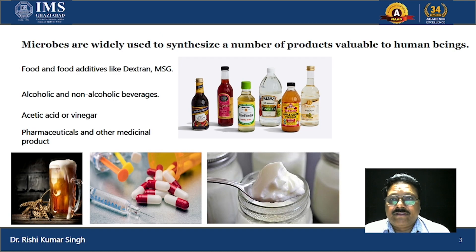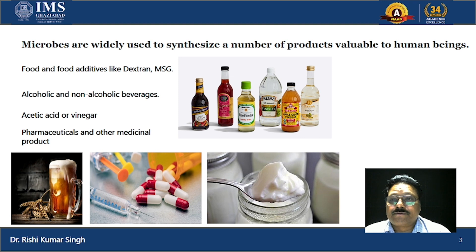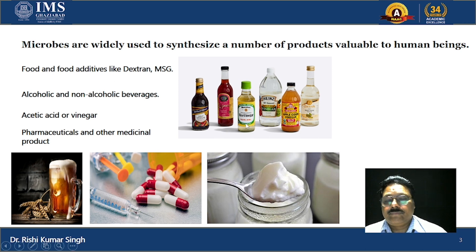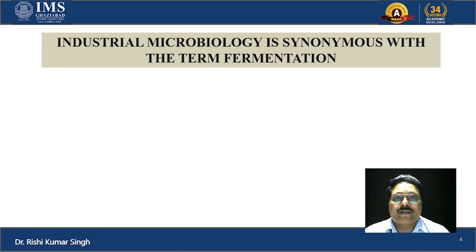In this slide, you can see that microbes are widely used to synthesize a number of products like bakery products, food and food additives like dextran — used in various soups and puddings — MSG in Chinese preparations, alcoholic and non-alcoholic beverages, vinegars, glycolic acids, and medicinal and pharmaceutical products like enzymes and probiotics. Industrial microbiology is synonymous with the term fermentation.